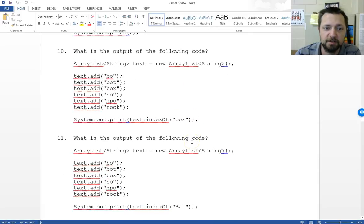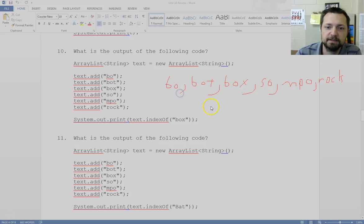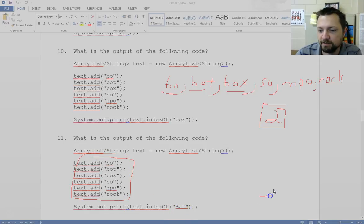Now we need to move on to question 10. We have bow, bot, box, so, MPO, and rock. If we wanted to do the index of box - 0, 1, 2. Box can be found at position 2. If we did the same text, notice this text does not have a bat, and we do index of bat, we will not find it. So we'll get a minus 1.